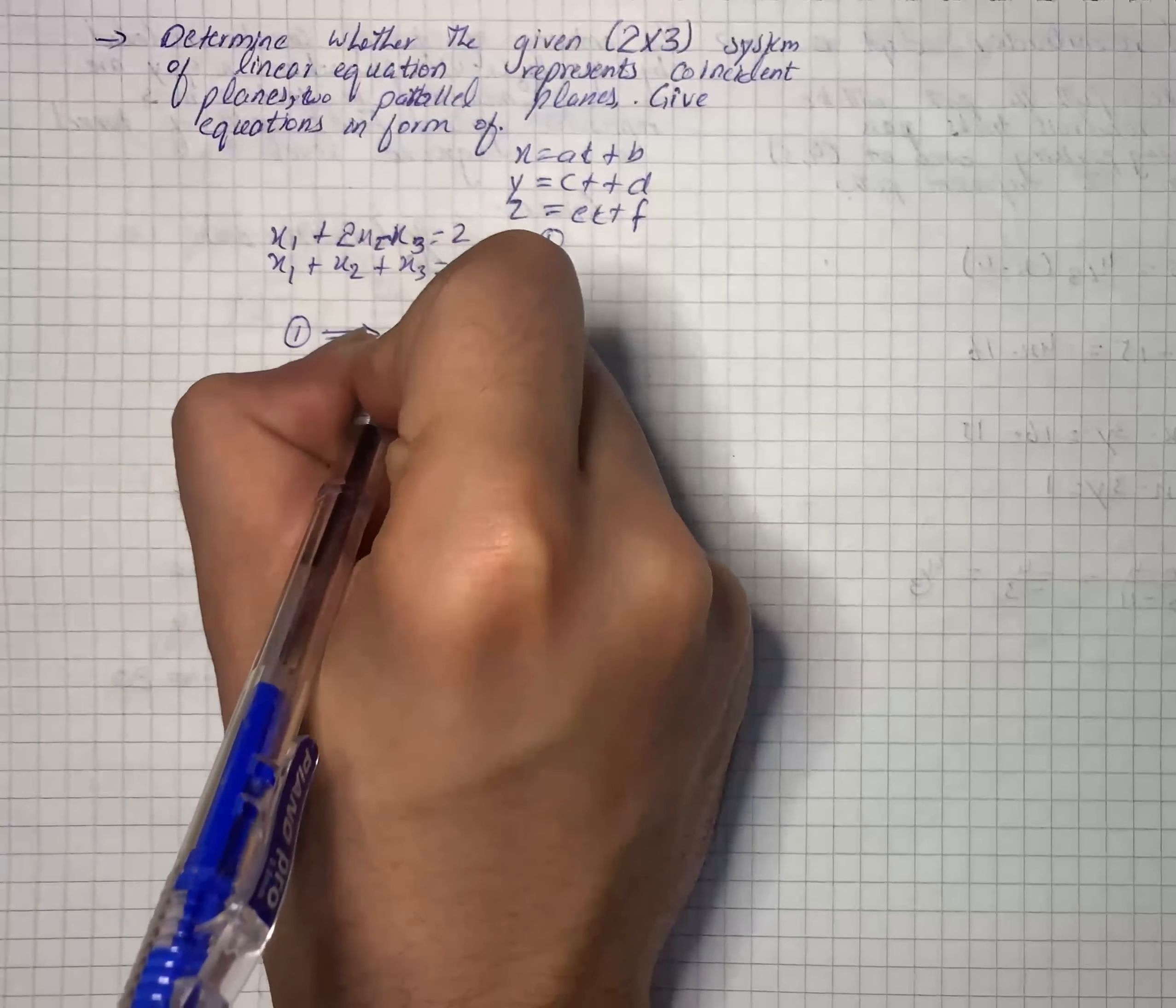We will replace x₁ = 2 - 2x₂ + x₃ in the second equation. In equation 2, we have 2 - 2x₂ + x₃ + x₂ + x₃ = 3. So -x₂ = 1 - 2x₃.